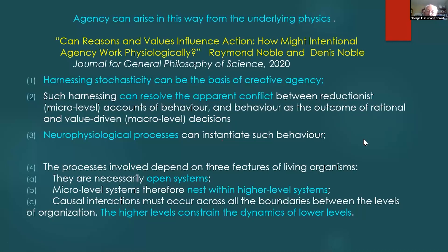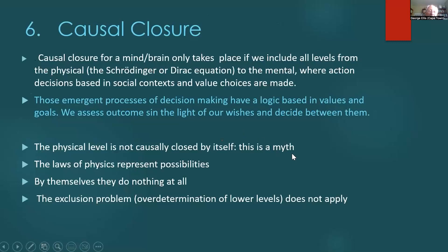Causal closure for a mind or brain only takes place when considering all levels — from the physical Schrödinger-Dirac equation to the mental, where action decisions are made based in social context and value choices. The physical level is not causally closed by itself — that's a myth. The laws of physics represent possibilities only; by themselves they do nothing. Maxwell's equations sitting there don't do anything until you give them a context. The exclusion problem of over-determination of lower levels does not apply.